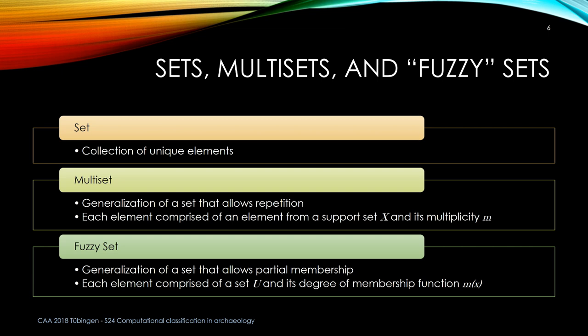A lot of what we're talking about when discussing artifact classification are systems of coding that occur within proveniences — so, sets. Sets are simply collections of unique elements. The problem with a formal set is that an entity can only appear once — it has to be unique.